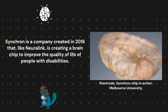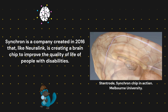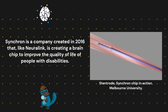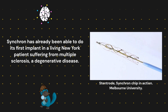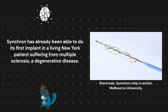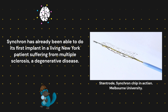Synchron is a company created in 2016 that, like Neuralink, is creating a brain chip to improve the quality of life of people with disabilities. Synchron has already been able to do its first implant in a living New York patient suffering from multiple sclerosis, a degenerative disease.